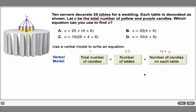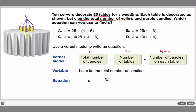We write it in parentheses: four plus six. So the equation is c equals 25 multiplied by (4 + 6). That gives us the correct choice.